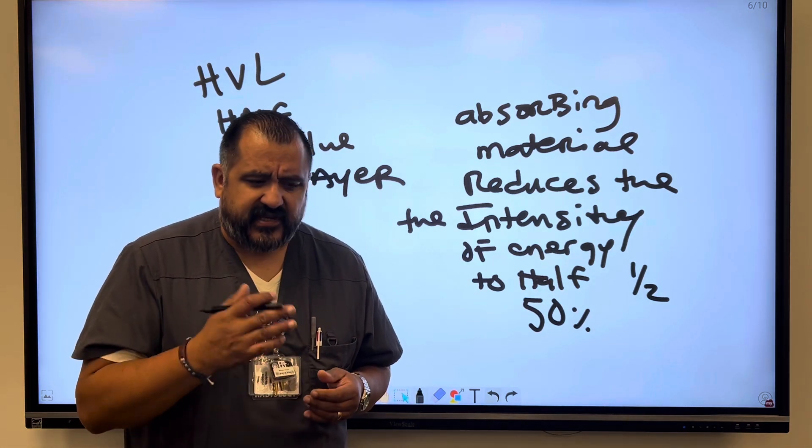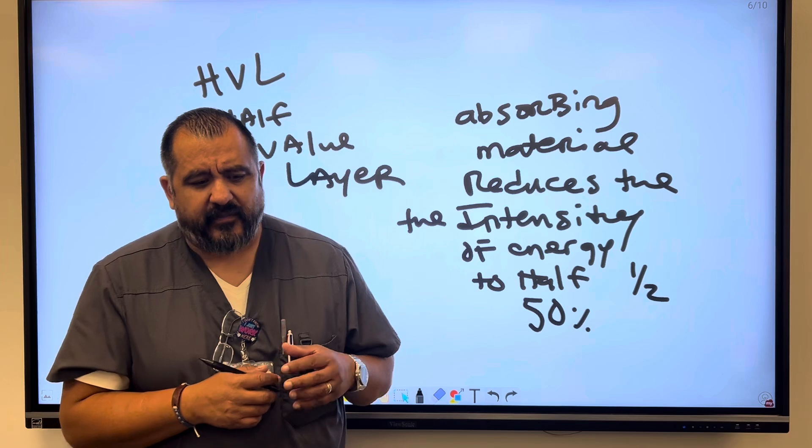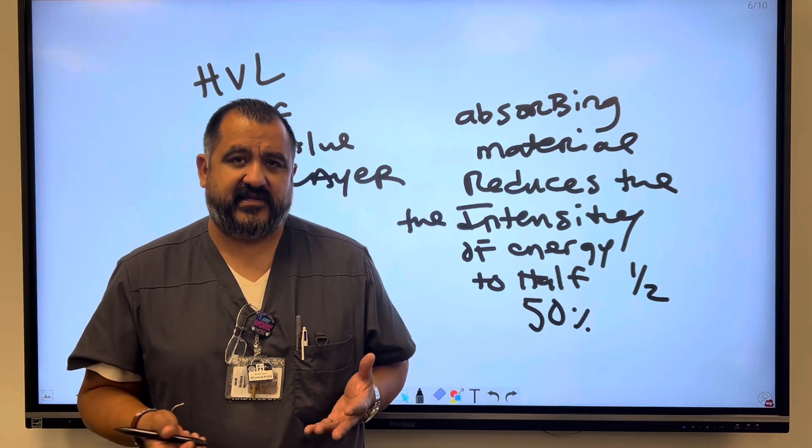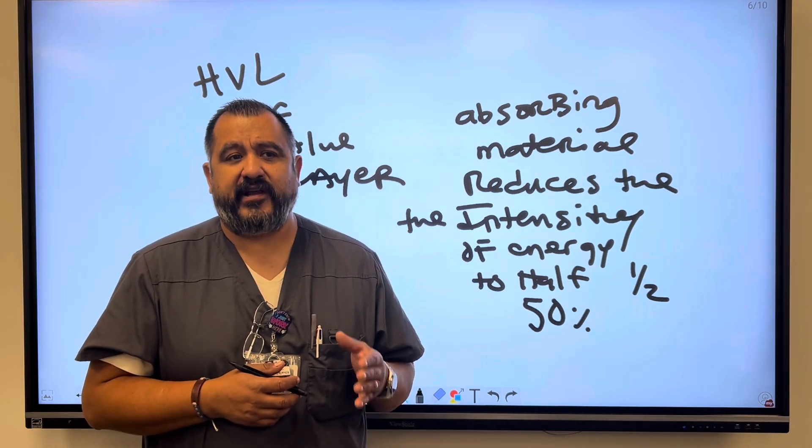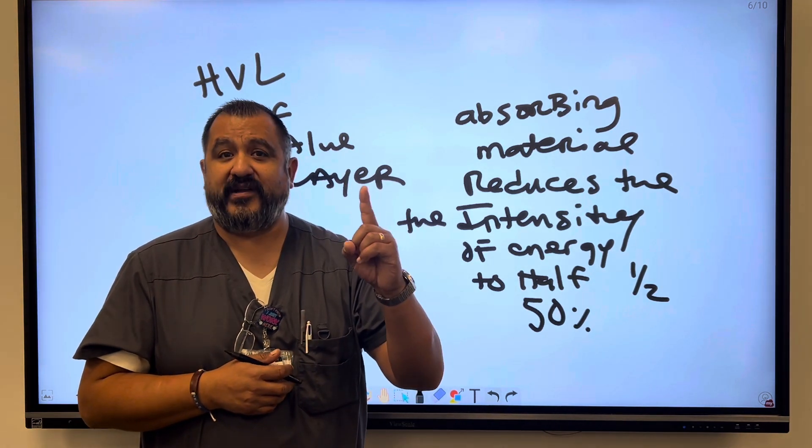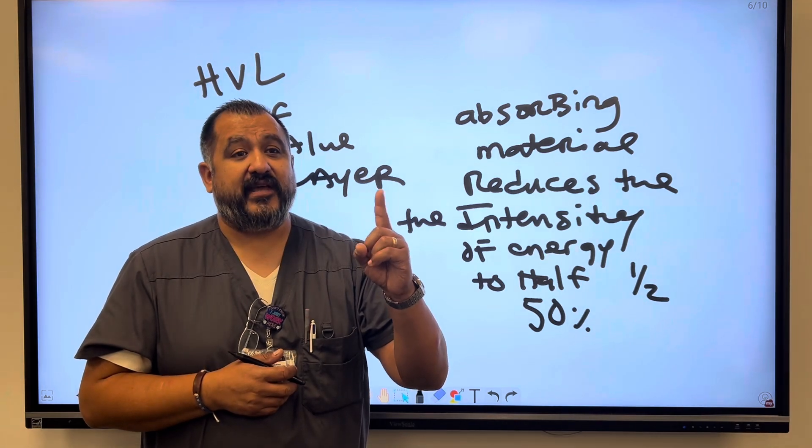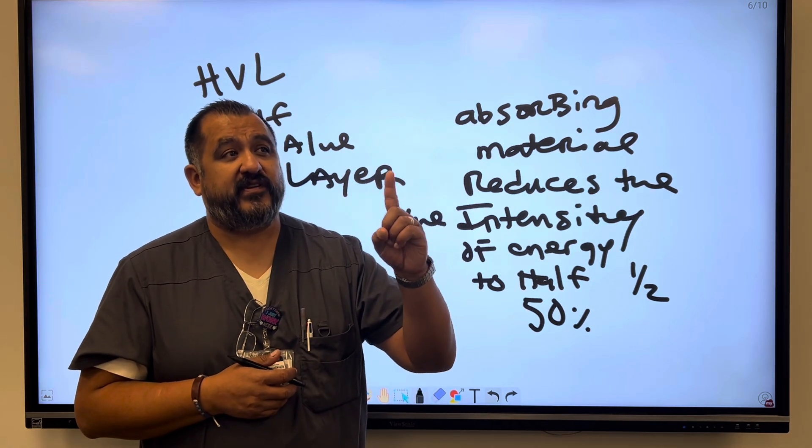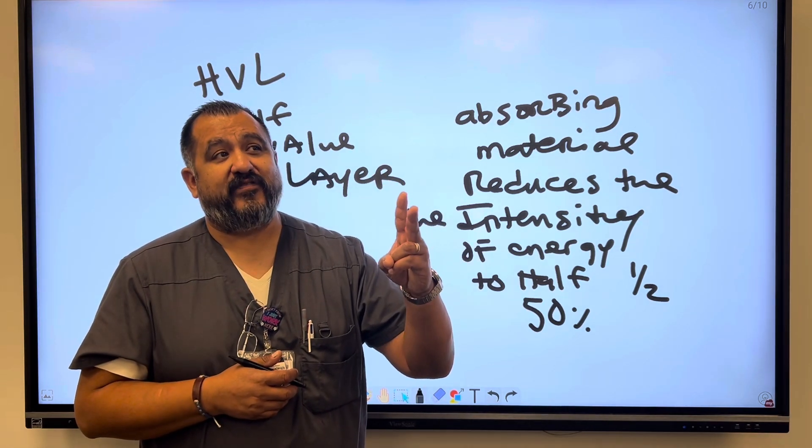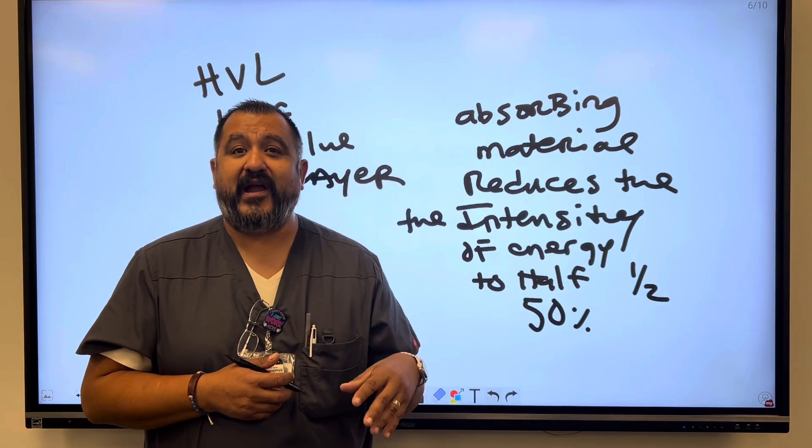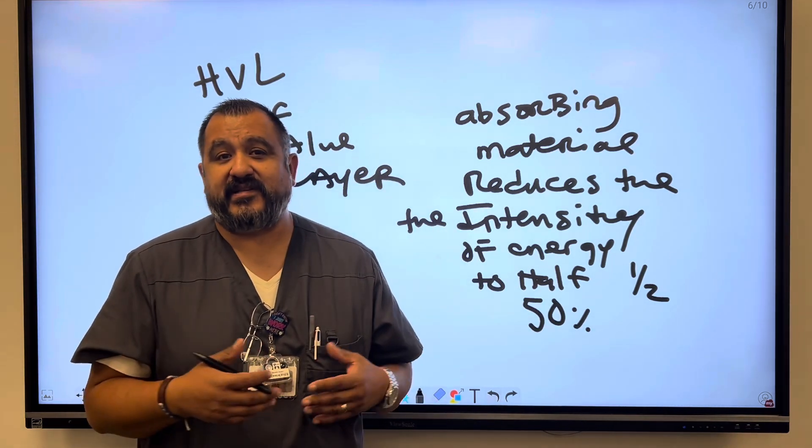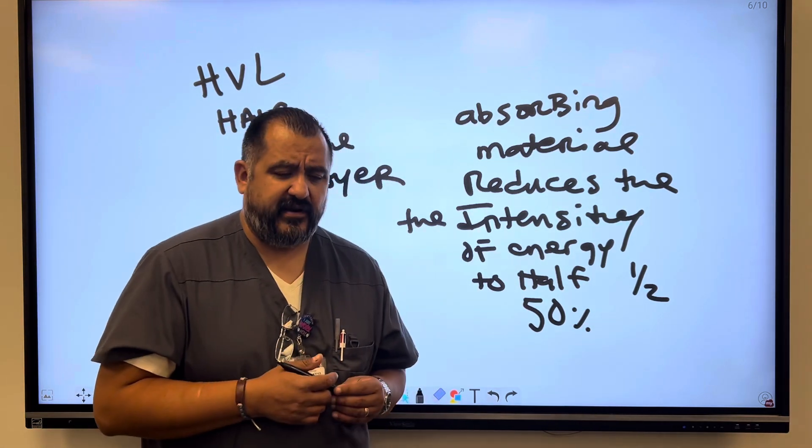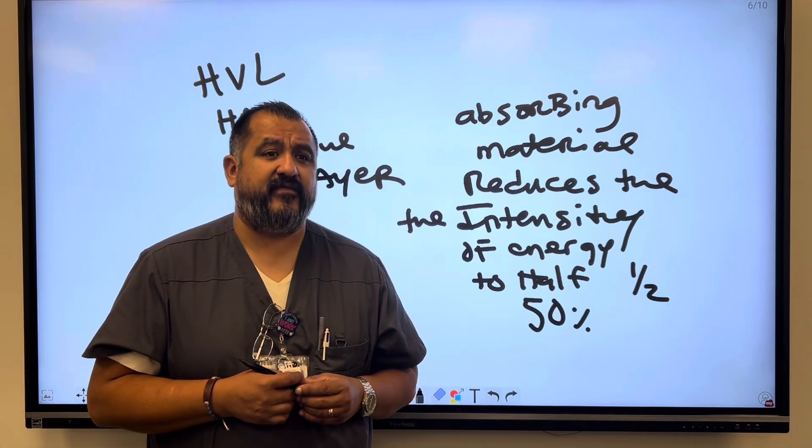So I've seen in some of the review questions how many half value layers would it take to reduce the intensity to below like 10%, let's say. So if you have a half value layer that reduces it by 50%, that's one. So again, another is going to be - you go from 100 to 50, and then you go from 50 to 25, then you go 25 to 12.5, you would have to add like four half value layers to reduce it to get to below 10%. But again, the half value layer is reducing the intensity of radiation by half.